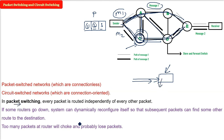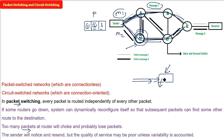Packet loss happens in packet switching but not in circuit switching. The sender will notice and reset. However, the quality of service can be poor because you need to account for which packets were dropped. The quality of service of packet switching is not as good as that of circuit-switched networks.